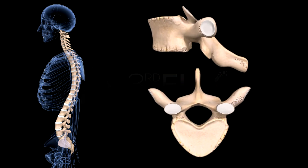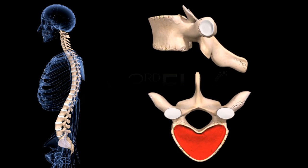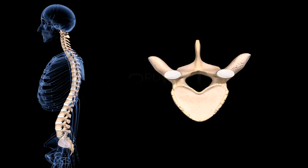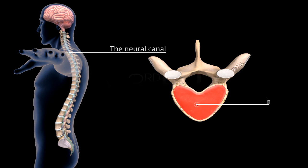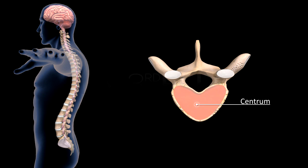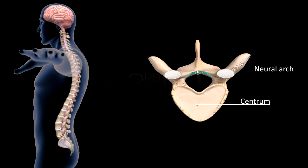In human beings, the centrum is flat at both ends without any concavities; hence the vertebrae are said to be of the amphiplatean type. The neural canal, or vertebral canal, occurs between the centrum and the neural arch. The spinal cord passes through this canal.